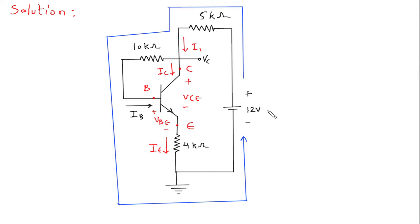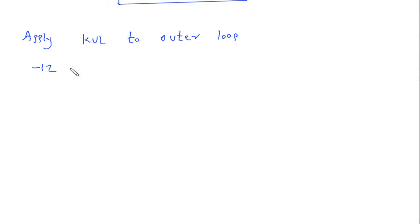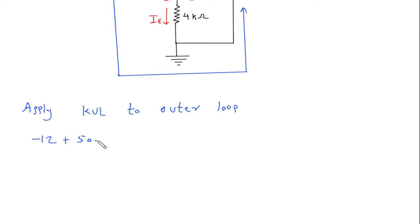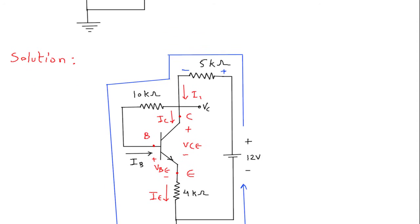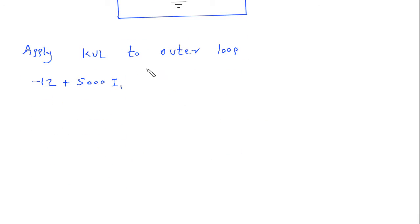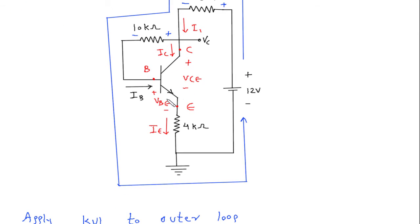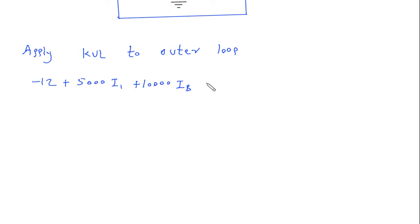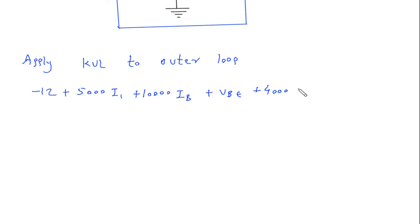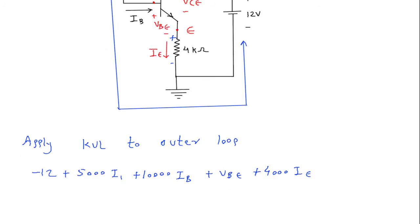Starting from this node and going around the outer loop, the KVL equation is: −12 + 5000·I1 + 10,000·IB + VBE + 4000·I1 = 0.